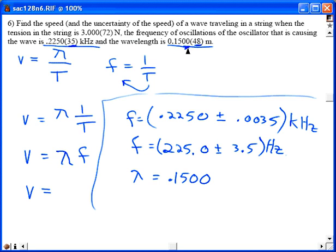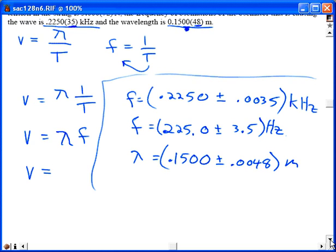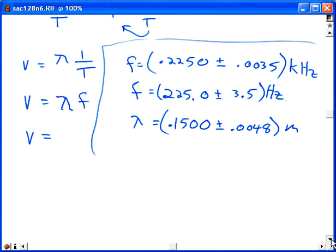And lambda is given as 0.1500, and then there's two digits of uncertainty, so that would be in these last two digits here changing everything else to get the uncertainty. I got plus or minus 0.0048 meters. So I could write that if I wanted to as 15 plus or minus a half a centimeter, roughly 15 centimeters plus or minus a half a centimeter.